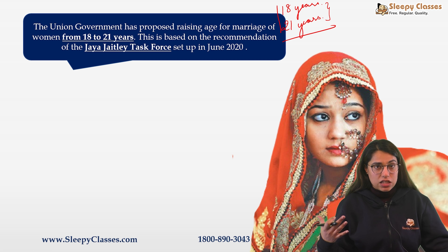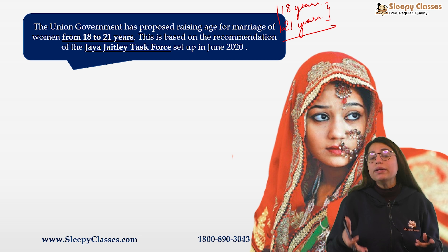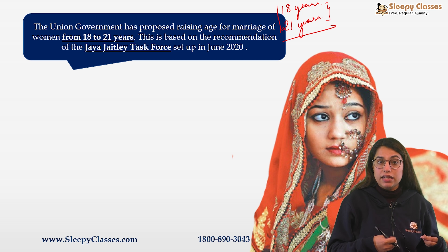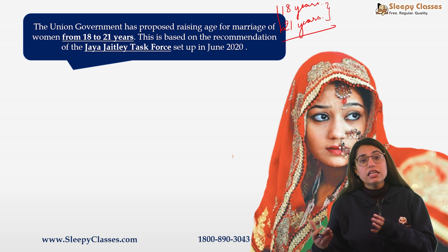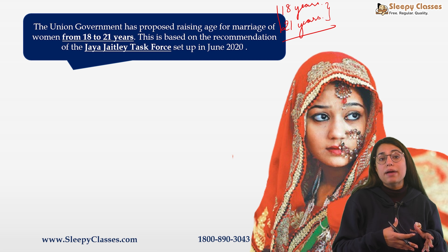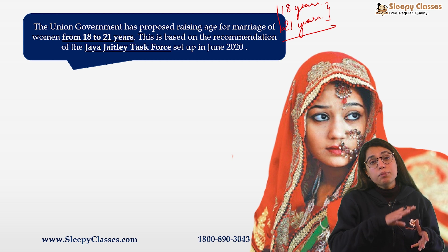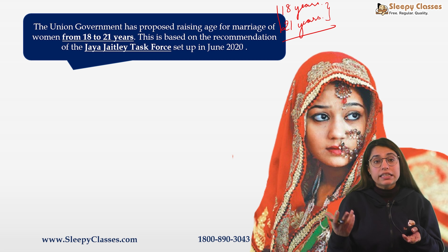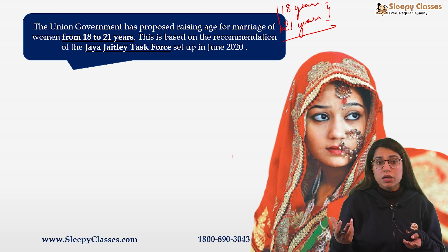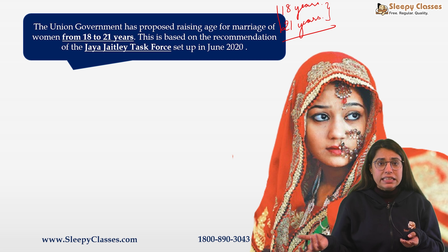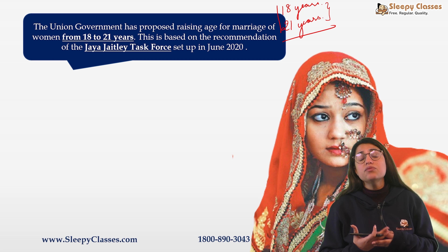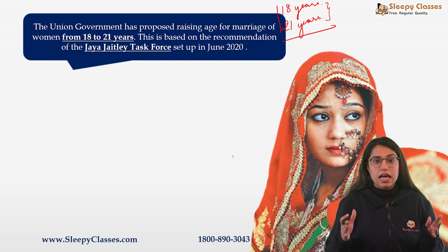The task force pointed out that there is also a link between early marriages and early motherhood. If women get married young — child marriage — many of us might have heard stories of grandmothers who were married at 16 and already had two kids by 18. This makes life very difficult for both the mother as well as the children. This was a central point before the task force.